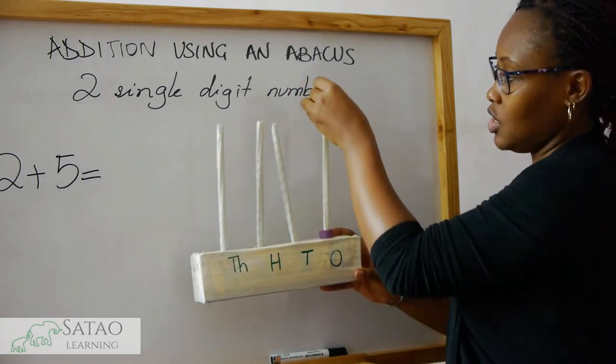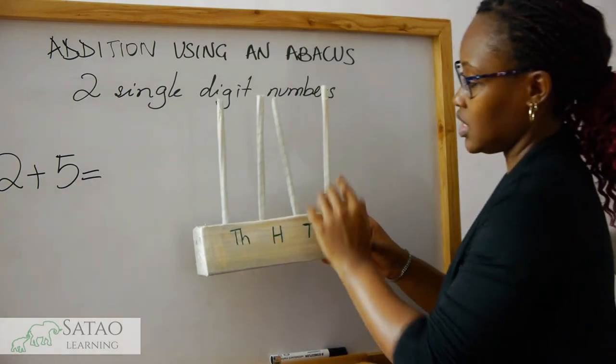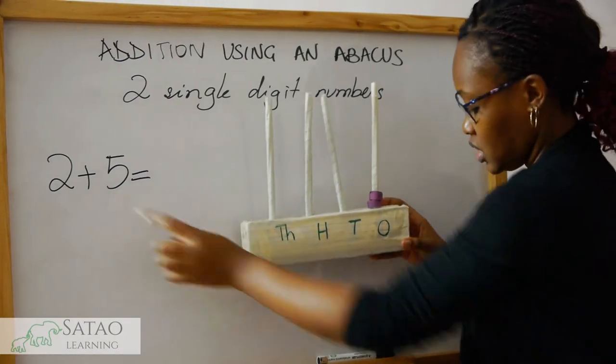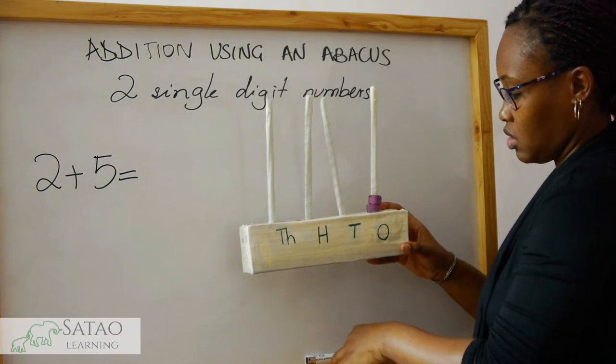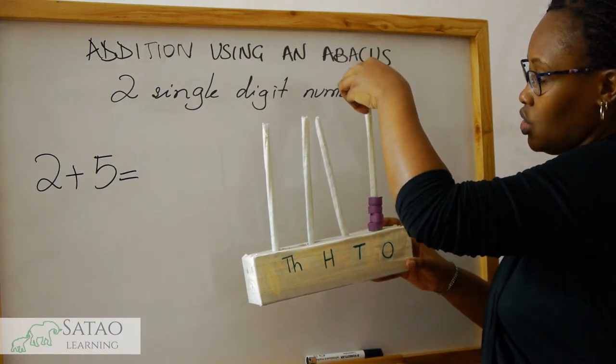One, two. And then on the same column we put five beads: one, two, three, four, five.